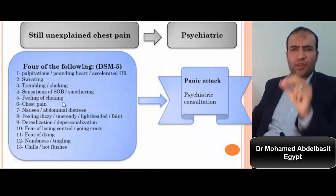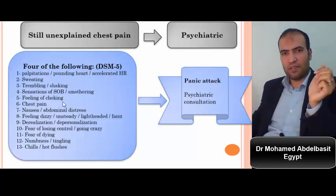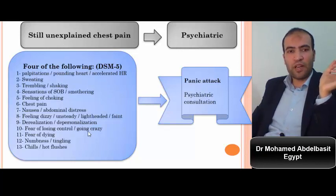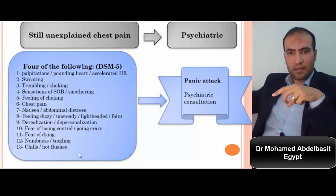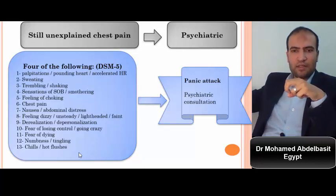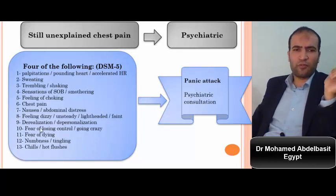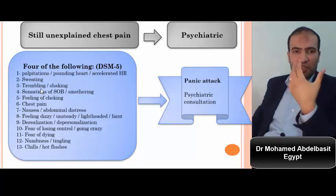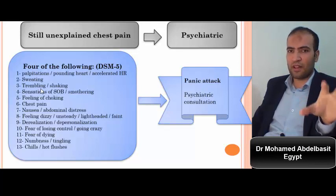If the patient still has unexplained chest pain, psychiatric causes are not malingering — the patient is genuinely suffering. Apply the DSM-5 criteria: if the patient has four or more of the following, they may have a panic attack — numbness, fear of dying, fear of losing control, dizziness, nausea, chest pain, feeling of choking, sensation of shortness of breath, sweating, headache, hot flushes. Refer to a psychiatrist for proper management.